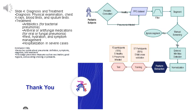Treatment strategies for pneumonia vary depending on the causative agent. Bacterial pneumonia often necessitates antibiotics, while viral or fungal types require distinct antiviral or antifungal medications, respectively. Alongside pharmaceutical interventions, adequate rest, hydration, and symptom management constitute crucial components of treatment. Severe cases may necessitate hospitalization to ensure intensive care and monitoring. This slide features a diagnostic flowchart and an overview of treatment options, elucidating the step-by-step diagnostic process and highlighting the diversity in treatment modalities based on the infection's underlying cause.